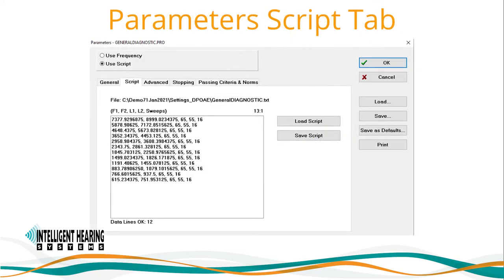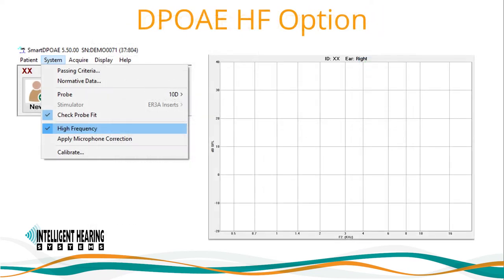If you choose to use the script mode, certain parameters in the general tab will be grayed out and the frequency tab will be replaced with the script tab, where you can define your protocol frequencies, intensities, and sweeps exactly as you want them on multiple data lines. You can use the Save Script and Load Script buttons to create and reuse script files.